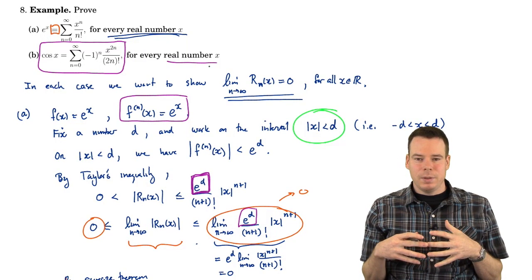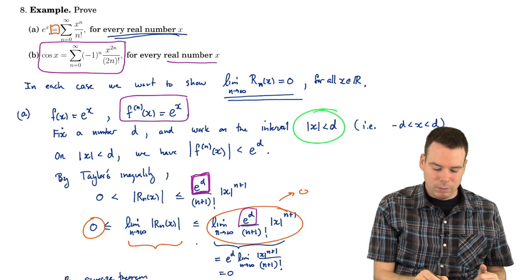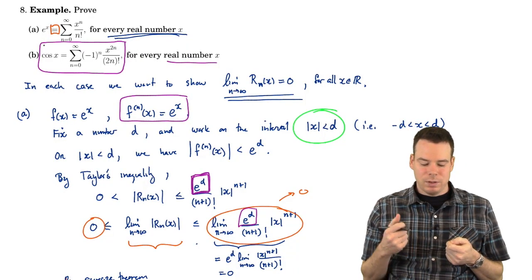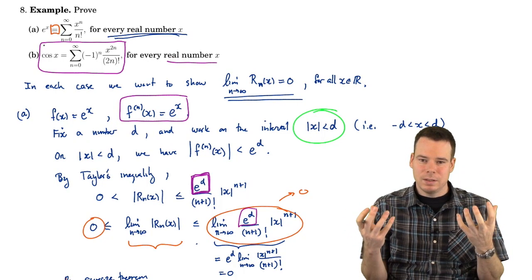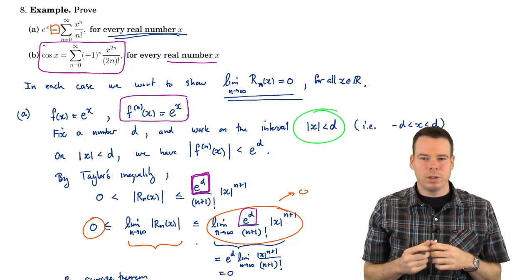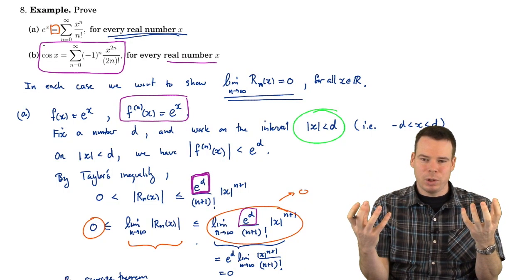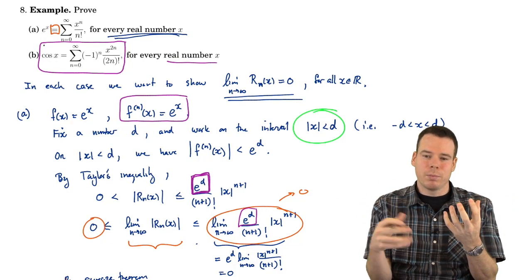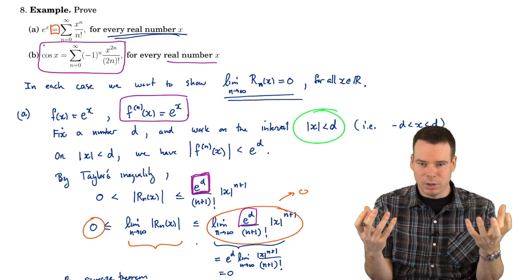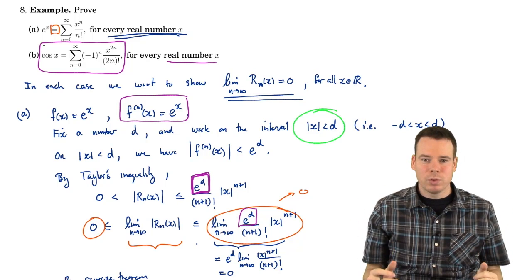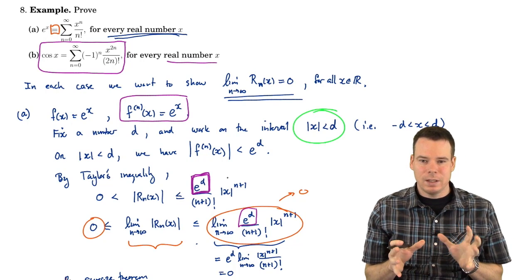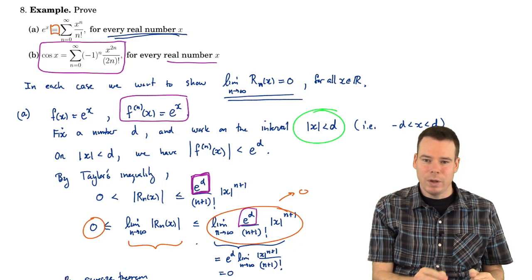This is a subtle point: we constructed the Taylor series and now we're showing we do have equality. Having equality really means showing the difference between the series and the function is 0. The series is a limit of Taylor polynomials, so we're showing that the difference between the function and the nth Taylor polynomial gets smaller and smaller the more terms you use. Using Taylor's inequality and the special limit of x^n/n!, we establish the equality in these cases.